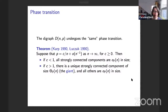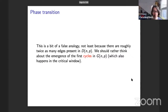The digraph model DNP undergoes the same phase transition — a result due to Karp and Wormald from 1990. If we take P to be C/n plus potentially something little-o of n to the minus one, then if C is less than one, all strongly connected components are microscopic in size. If C is bigger than one, there's a unique strongly connected component of size big-O of n — a giant component — and all others are microscopic. So far, this is similar to GNP, but this is really a false analogy, not least because there are roughly twice as many edges present in the digraph model. We should rather think about the emergence of the first cycles in GNP as a better analogy, and that also occurs in the critical window.